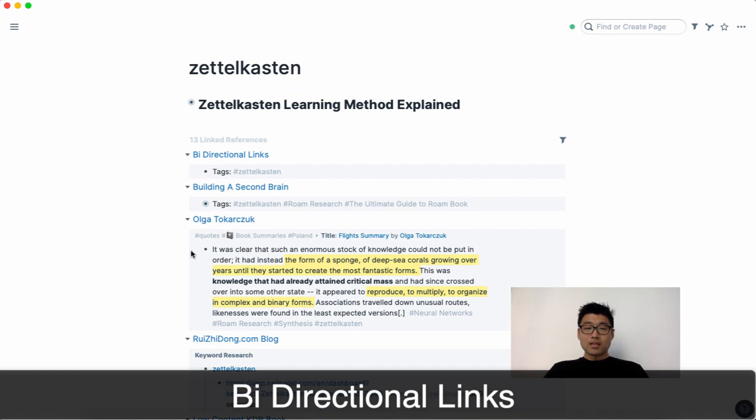And this here is a quote that is from Olga's book called Flight, which is a great book. And I really like this quote, which is: 'It was clear that such an enormous stock of knowledge could not be put in order. It had instead the form of a sponge, of deep sea corals growing over years until they started to create the most fantastic forms. This was knowledge that had already attained critical mass and had since crossed over into some other state.'